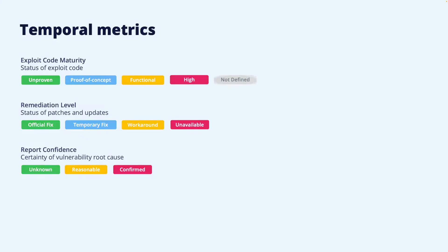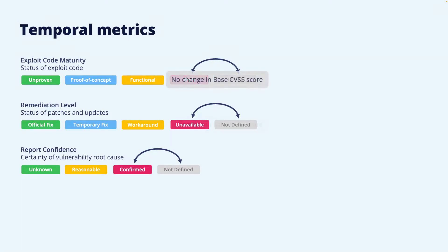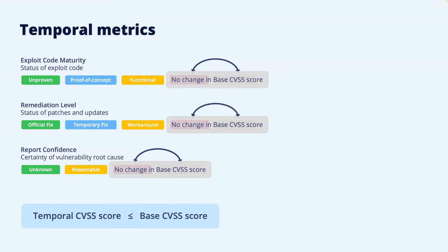For all three temporal metrics, there is also a not-defined value, used when there is not sufficient information to set one of the other values. If there is not enough information, the worst case is expected. So when computing the severity, not-defined is equivalent to high exploit code maturity, unavailable remediation, and confirmed report confidence. The most severe values of the temporal metrics do not alter the base score — meaning the base score always assumes the worst cases from a temporal metric point of view. With less severity in the temporal metrics, the base score is modified to a lower score. The temporal CVSS score is therefore always less than or equal to the base CVSS score.